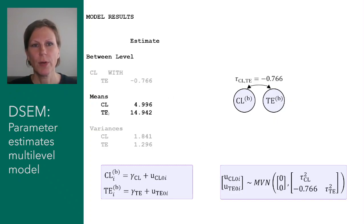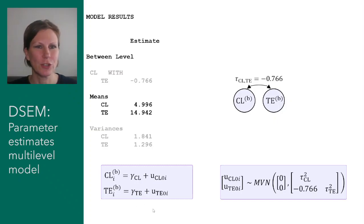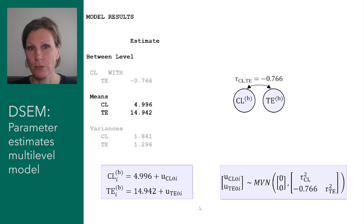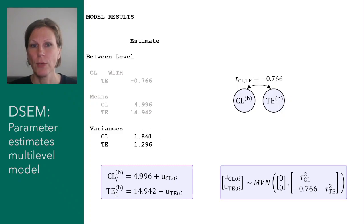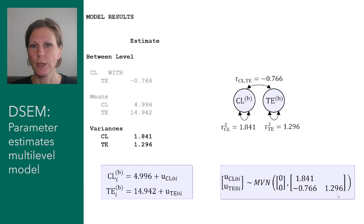In the regression equations this covariance appears as the off-diagonal element of the covariance matrix for the residuals. The means — the gammas — are not included in the path diagram but are part of the regression equations; sometimes called fixed effects, though that terminology varies across disciplines. Finally, the variances are reported and included in the path diagram as two-headed arrows to the variable itself, and appear as diagonal elements of the covariance matrix.